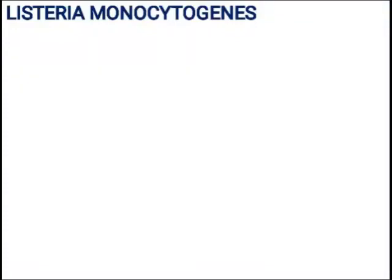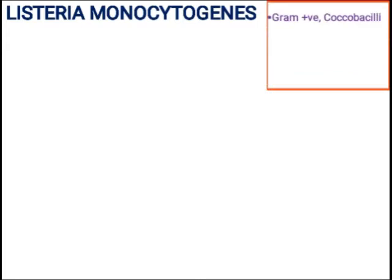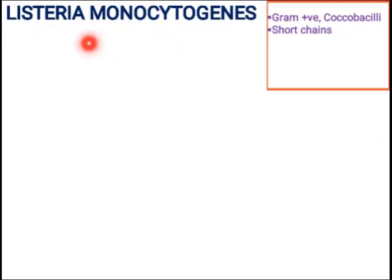Welcome back. This is Bilal and listeriosis is based on Listeria monocytogenes. Listeria monocytogenes is a gram-positive coccobacillus, meaning it has an appearance between coccus and bacillus. This bacterium forms a short chain, where one coccobacillus is attached to another coccobacillus, forming short chains in the case of Listeria monocytogenes.